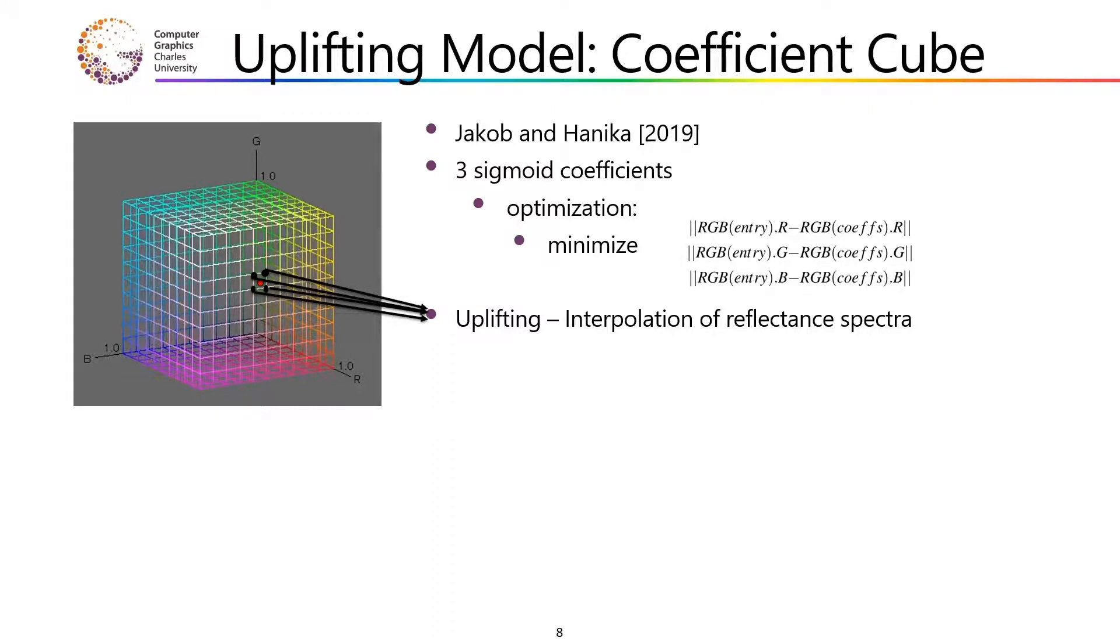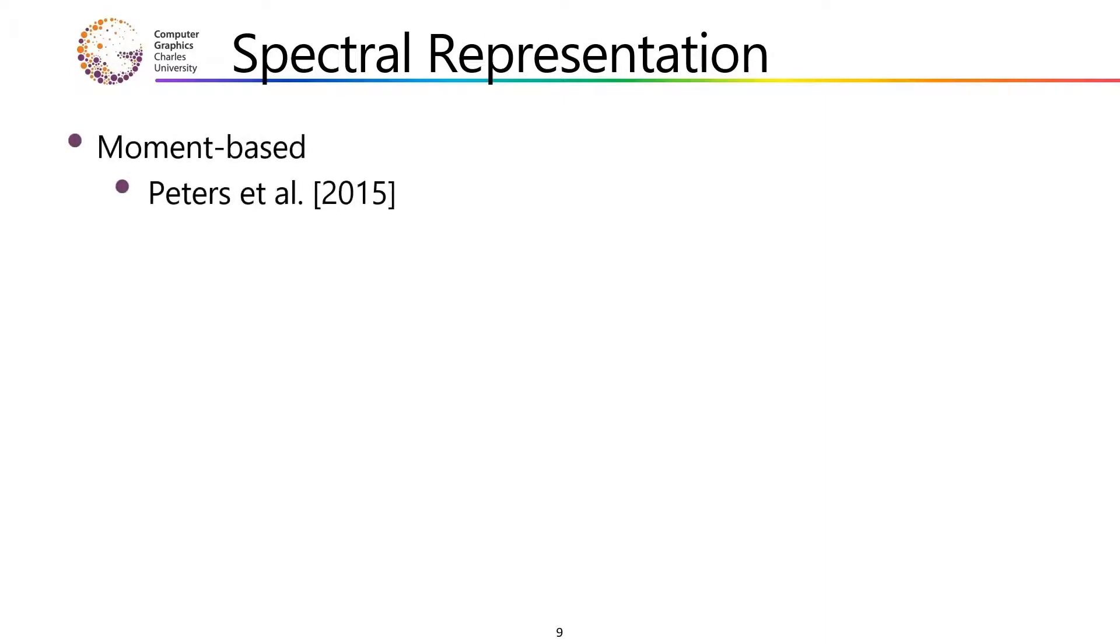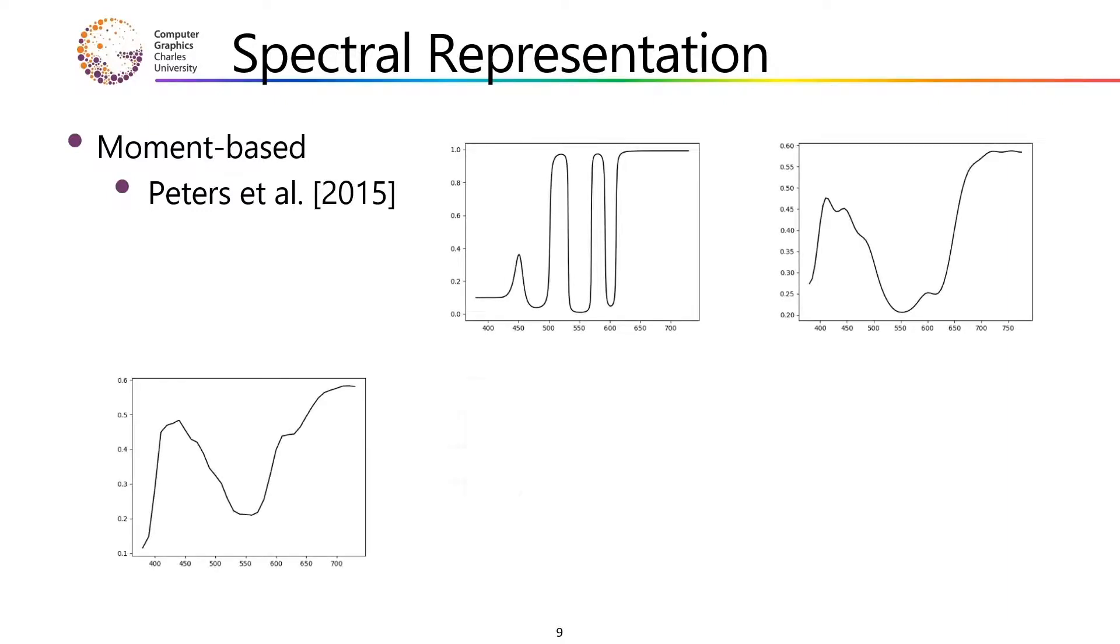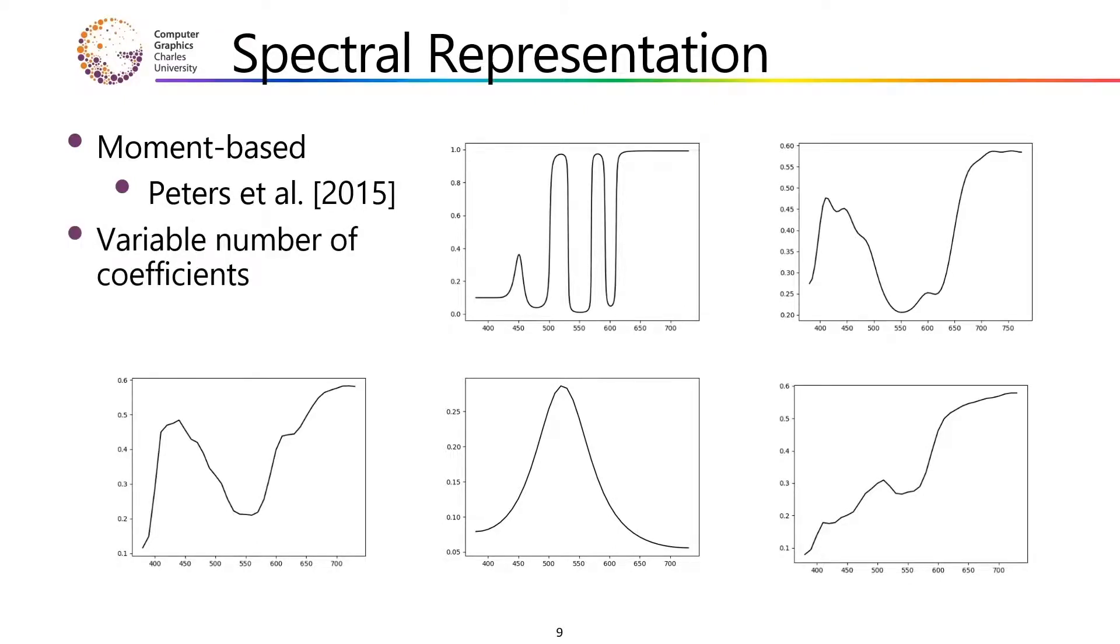Our constraint model works in a similar manner, but we also incorporate the user-inputted constraints. As the sigmoid representation is capable of representing smooth and simple spectra only, we utilize a different kind of representation. Specifically, we use the moment-based representation. It was designed in 2015 by Peters and it has impressive results in representing both smooth and complex reflectance spectral shapes. Although some of the more complex spectra require a lot more than three coefficients, we sometimes have to use as much as 20, the results of reconstruction are almost identical to the original input spectrum.